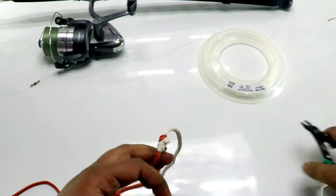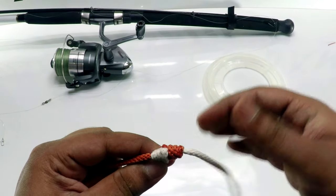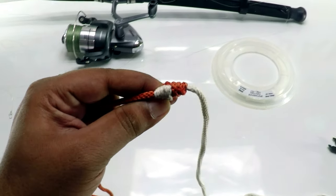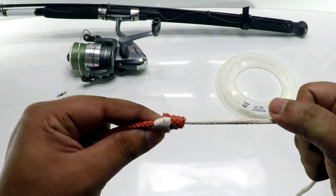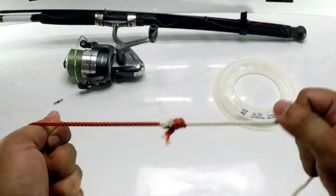The advantage is it's very thin so it can pass through your guides easily. It has no abrasion, won't get stuck in your guides, and you won't feel it in your reel.